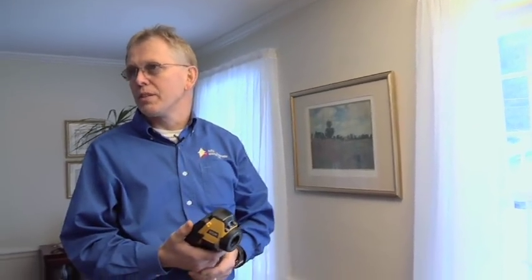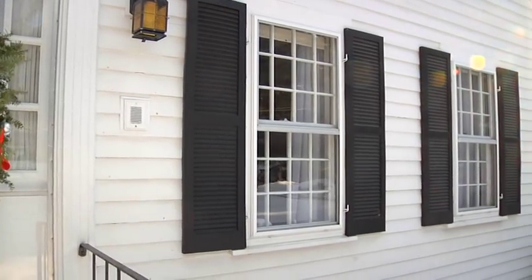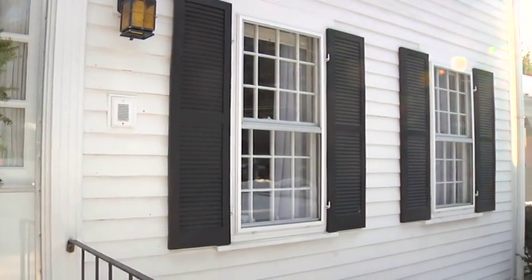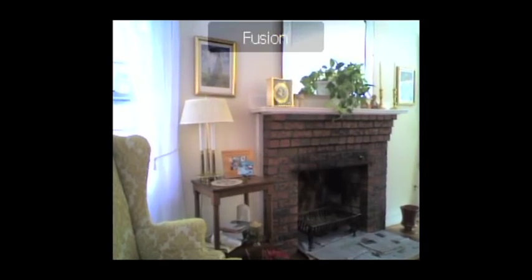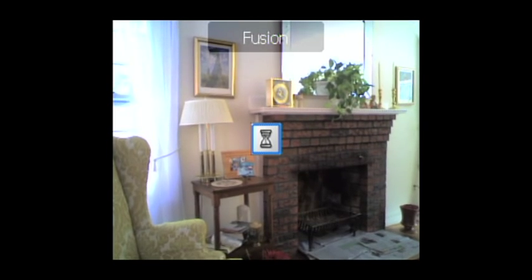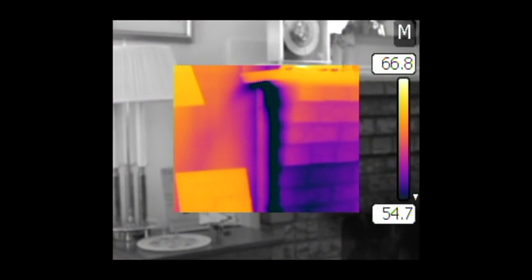And again, it's simple fixes — it doesn't cost a fortune to do these. We're back here in the family room where we saw before what we thought could be air infiltration from the seam where the fireplace meets the wall. Now with the blower door running, it's very obvious — definitely got air infiltration.